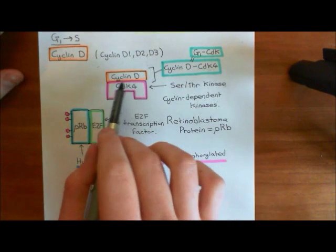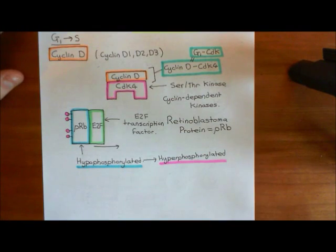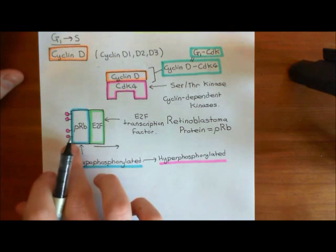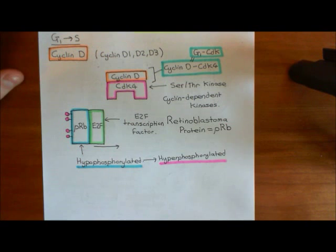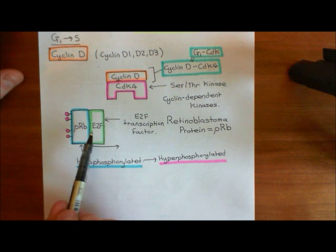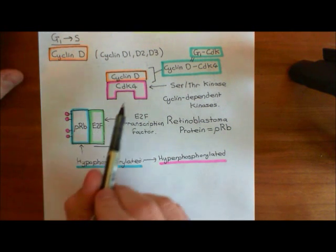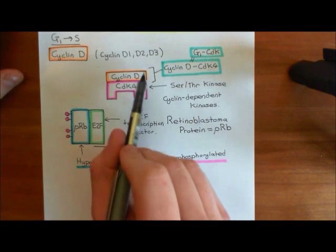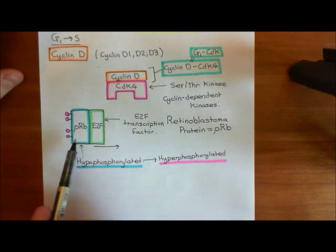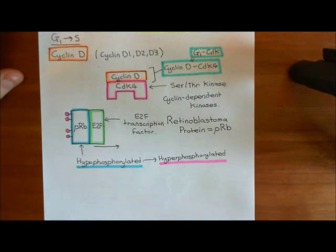Cyclin D then binds to CDK4 enzymes — cyclin-dependent kinase 4 enzymes — and this resulting cyclin D-CDK4 complex is now going to go into the nucleus and phosphorylate retinoblastoma proteins that are bound to E2F transcription factors. You have to phosphorylate retinoblastoma protein multiple times, which means a certain concentration of cyclin D-CDK4 complexes is needed before enough phosphate groups are attached to release the E2F transcription factors.